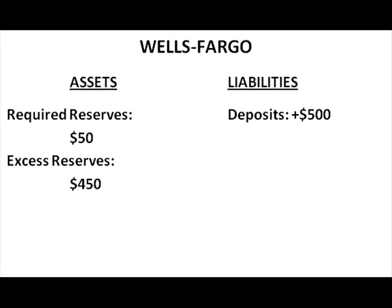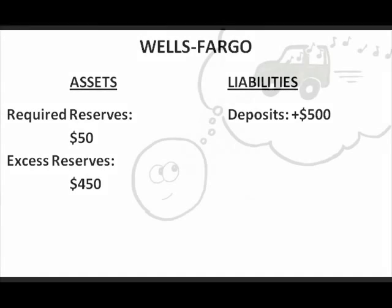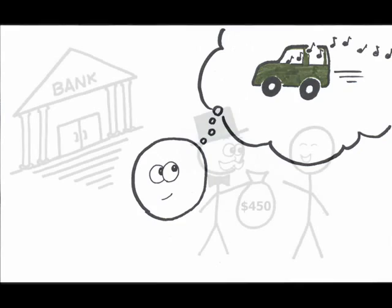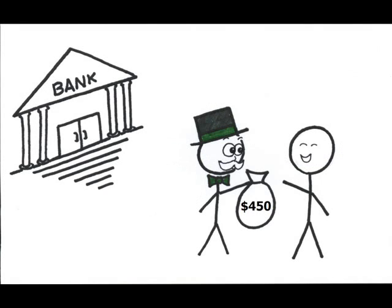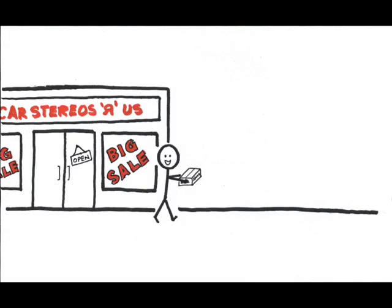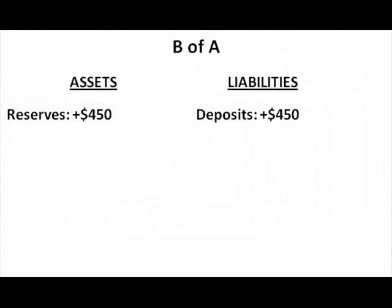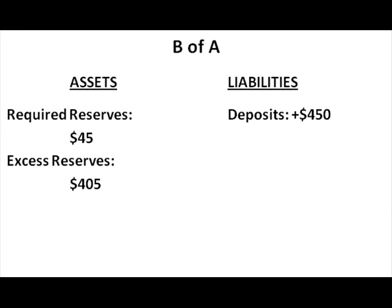This leaves $450 in excess reserves. Let's say that Jim wants to buy a new car stereo, but he needs $450. Wells Fargo lends Jim the $450 — that is, the $450 excess reserve asset is now replaced by the $450 loan that Jim will have to pay back — which he takes to the car stereo store. At the end of the day, the stereo retailer deposits the $450 with its bank, B of A. This means B of A has a new $450 deposit, $45 of which is required reserves, leaving $405 in excess reserves that it can lend out.